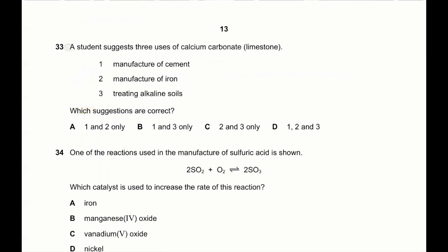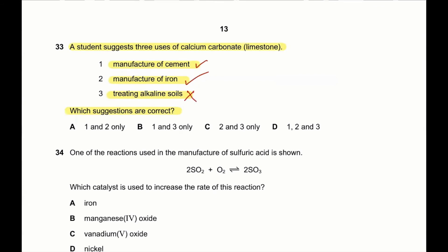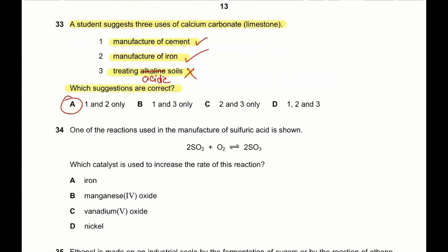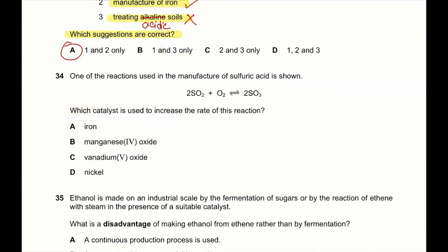Question 33: a student suggests three uses of calcium carbonate or limestone — manufacture of cement, manufacture of iron, and treating alkaline soils. Which suggestions are correct? One and two are correct. Three is wrong because we do not use limestone to treat alkaline soil conditions; we use it for acidic soils. So question 33, A is the correct answer.